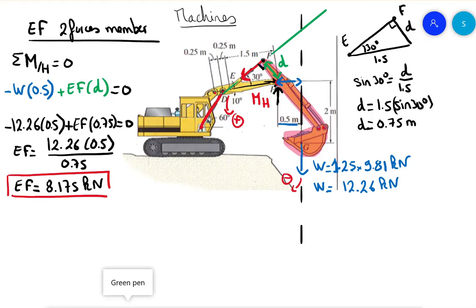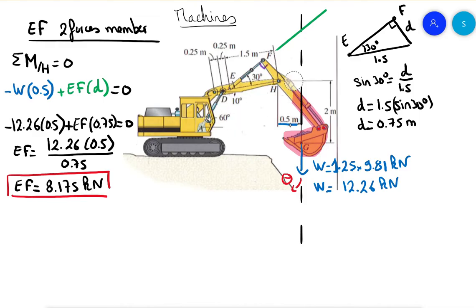For the second question we need to find the force in AD. We need a free body that does not cut through AD, so we consider a body that includes the force EF or the weight G at only one pin connection, allowing us to take a useful moment. We could take the body cut at point A or point D.